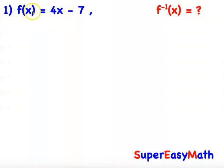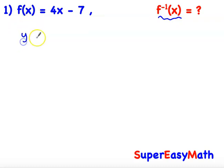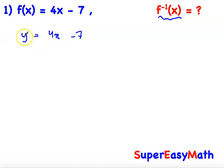Basically, we have three steps we should follow to find the inverse f⁻¹ of x. First of all, replace f(x) by y, so we will write y = 4x − 7. Then we will place x instead of y, and y instead of x.